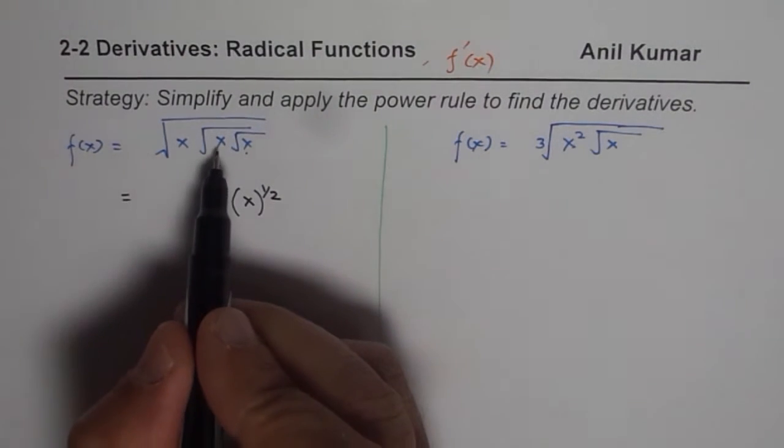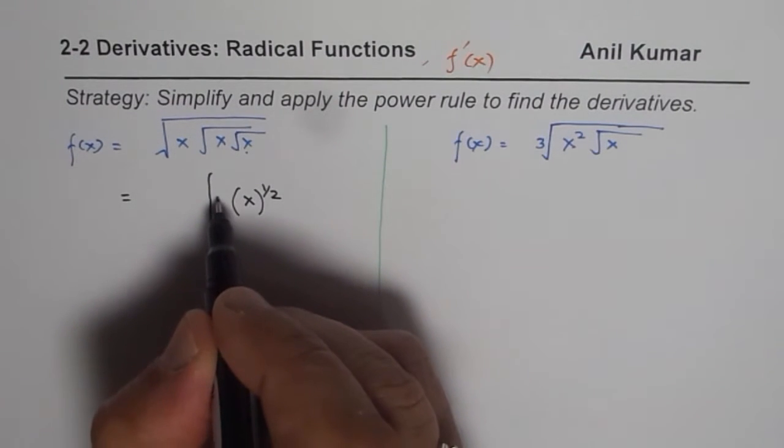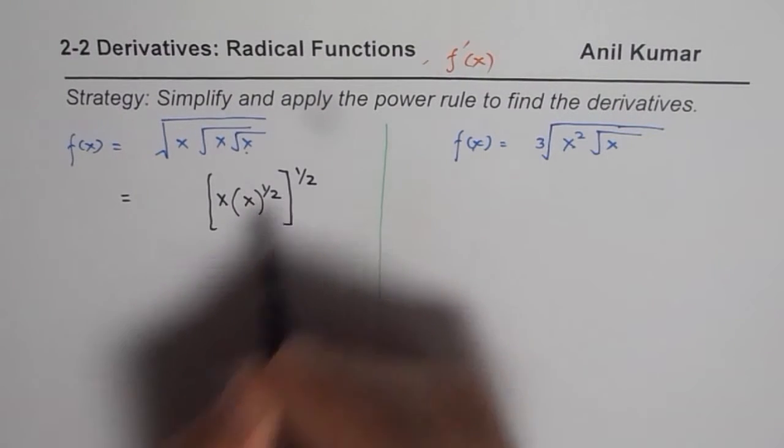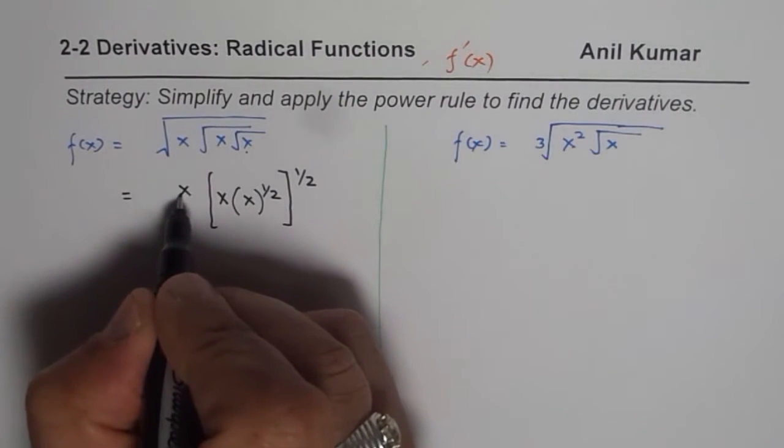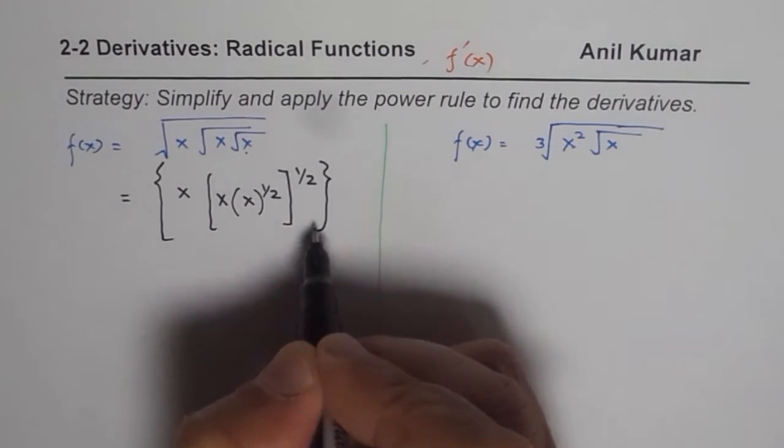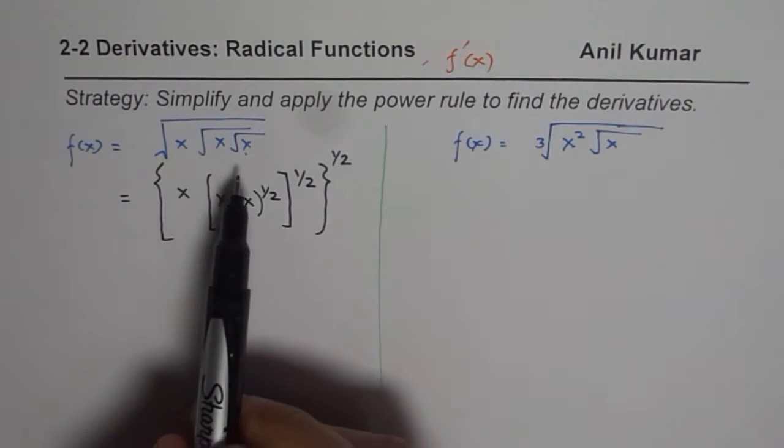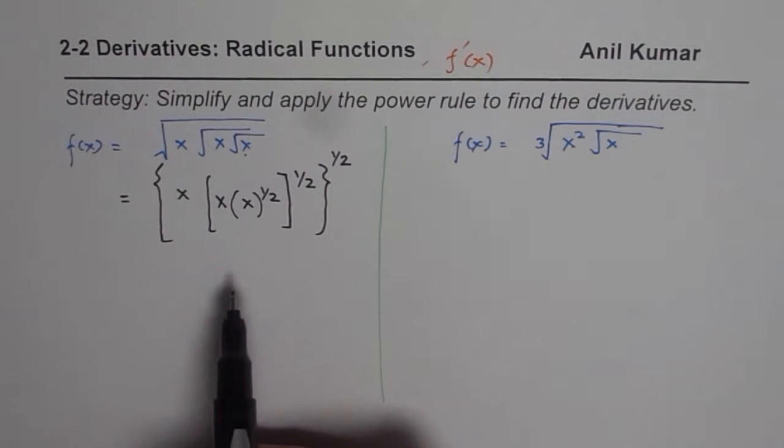So we have taken care of this function. And now we'll take care of this function within the square root. So it is x here and everything to the power of half. And now we'll take care of this x and let me use different brackets for that. So the outer function is like this and everything to the power of half.